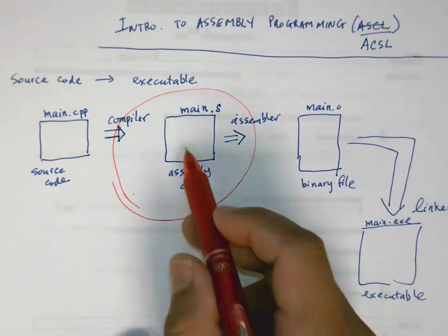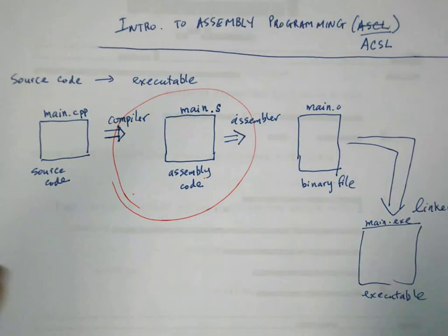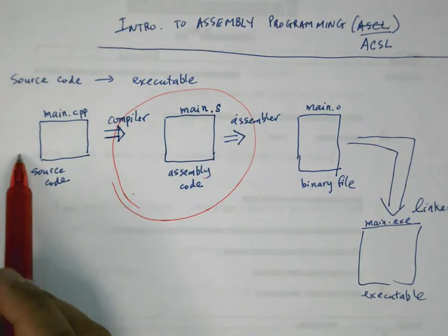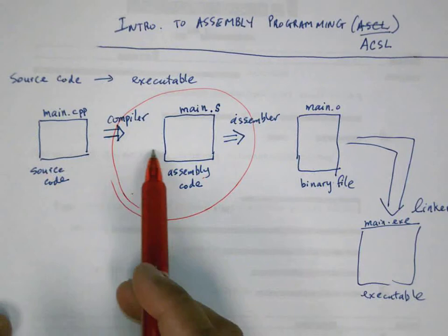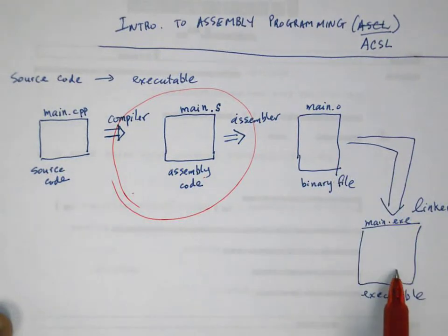This is the big picture. We start out with source code that a programmer can understand, and it goes through this pipeline here and produces an executable file that the computer can understand.